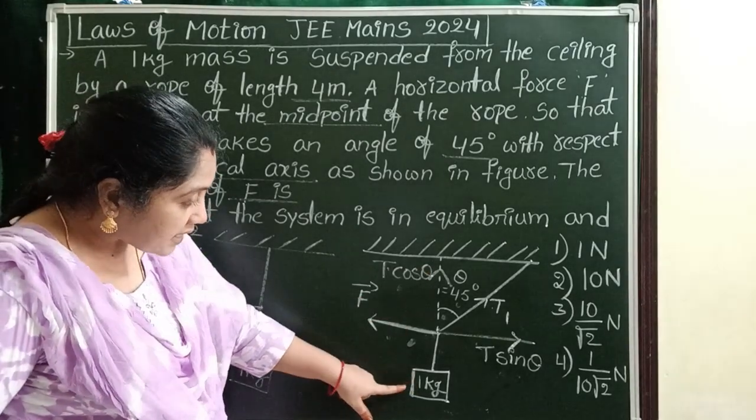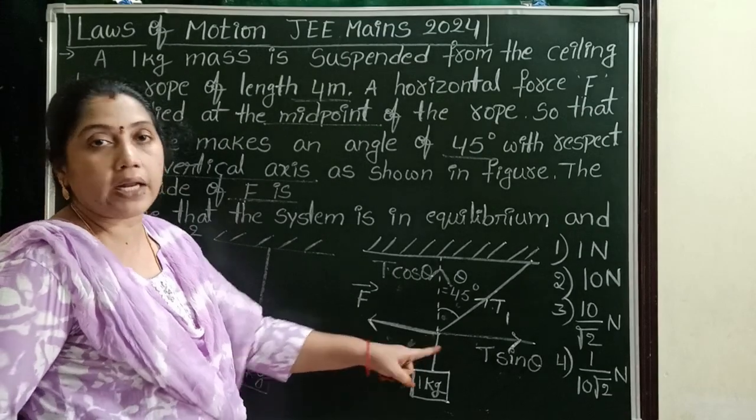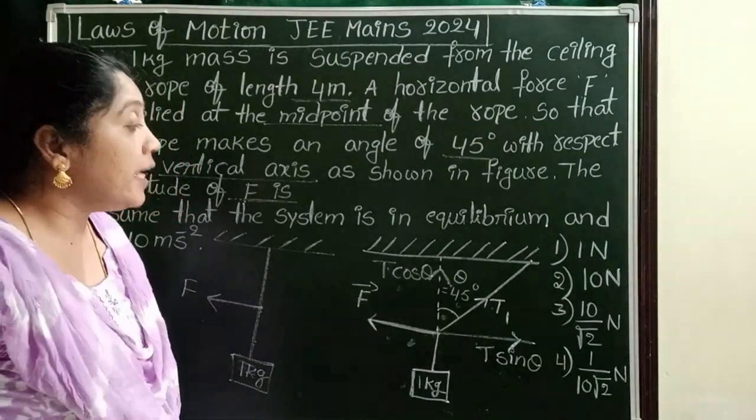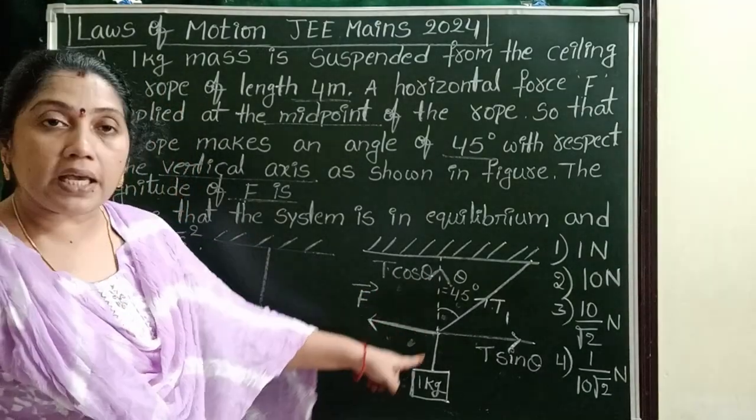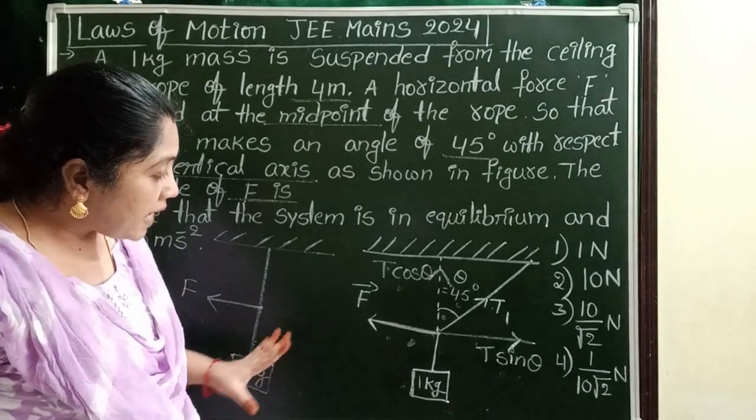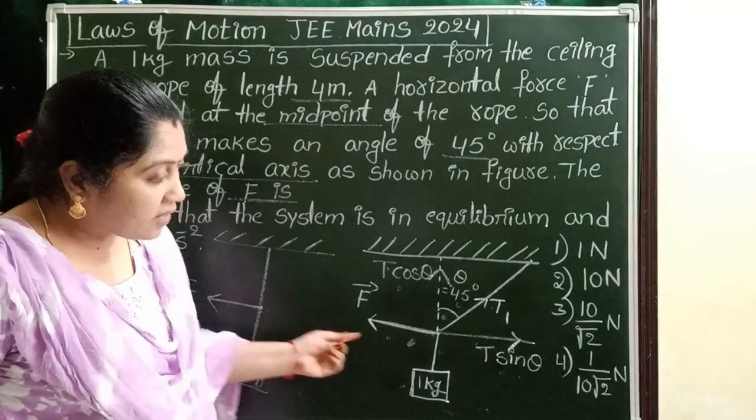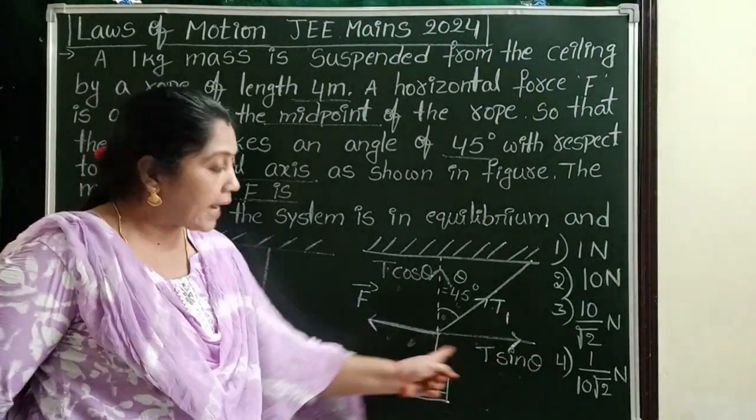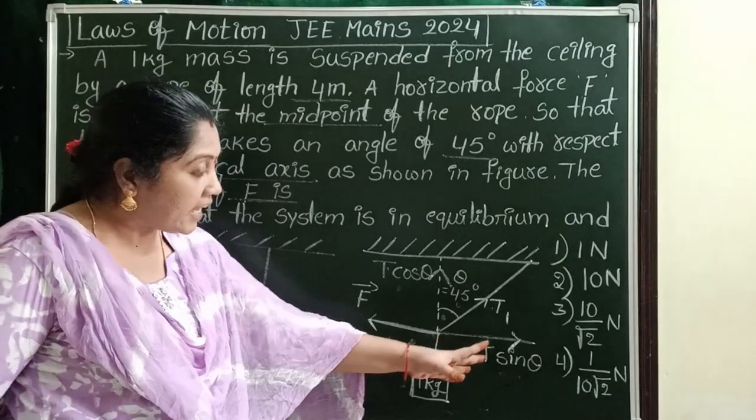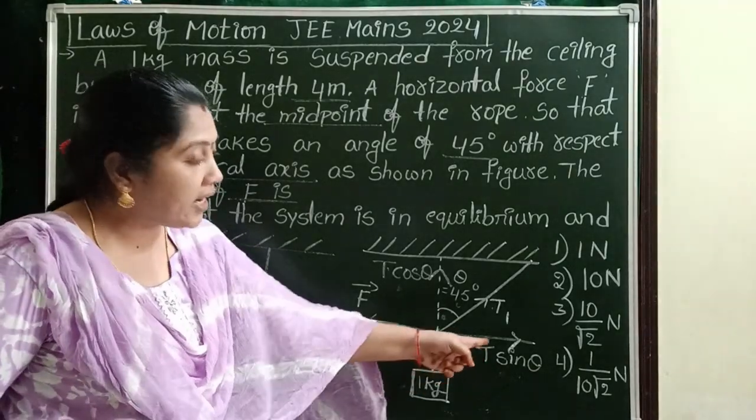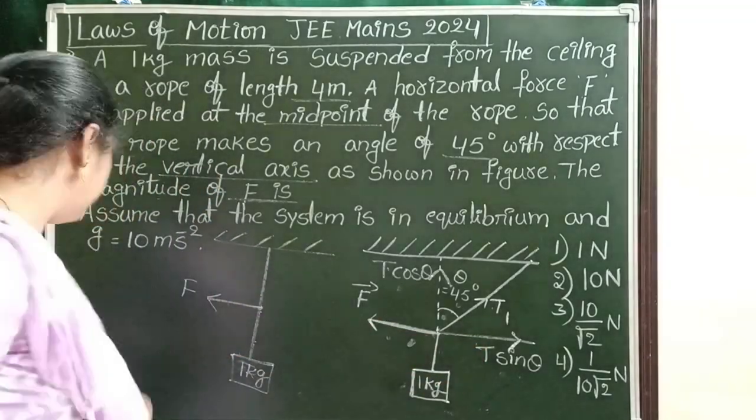Whenever these two forces are equal in magnitude and opposite in direction, then only this system is in vertical equilibrium position. At the same time, the applied force equals T sin theta, but acting in opposite directions, then the system is in horizontal equilibrium position.